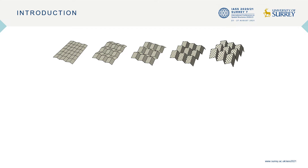The advantage over conventional sandwich core materials is that you can assign specific mechanical properties by choosing a fold pattern. For example, you can change the density of the fold, or you can even change the geometry to a more complex design.